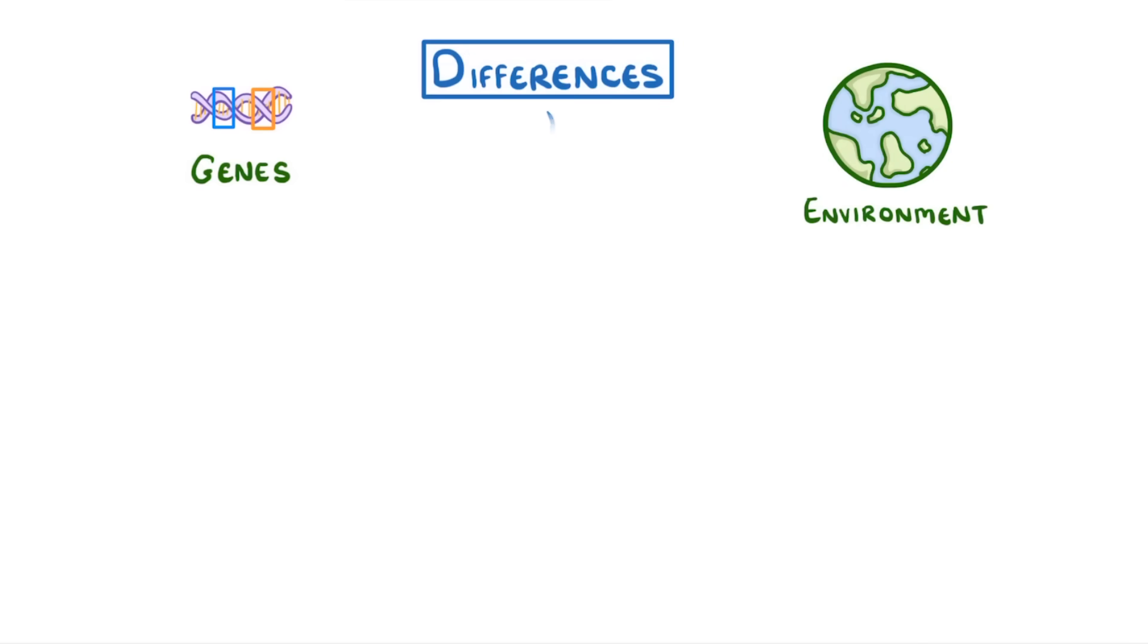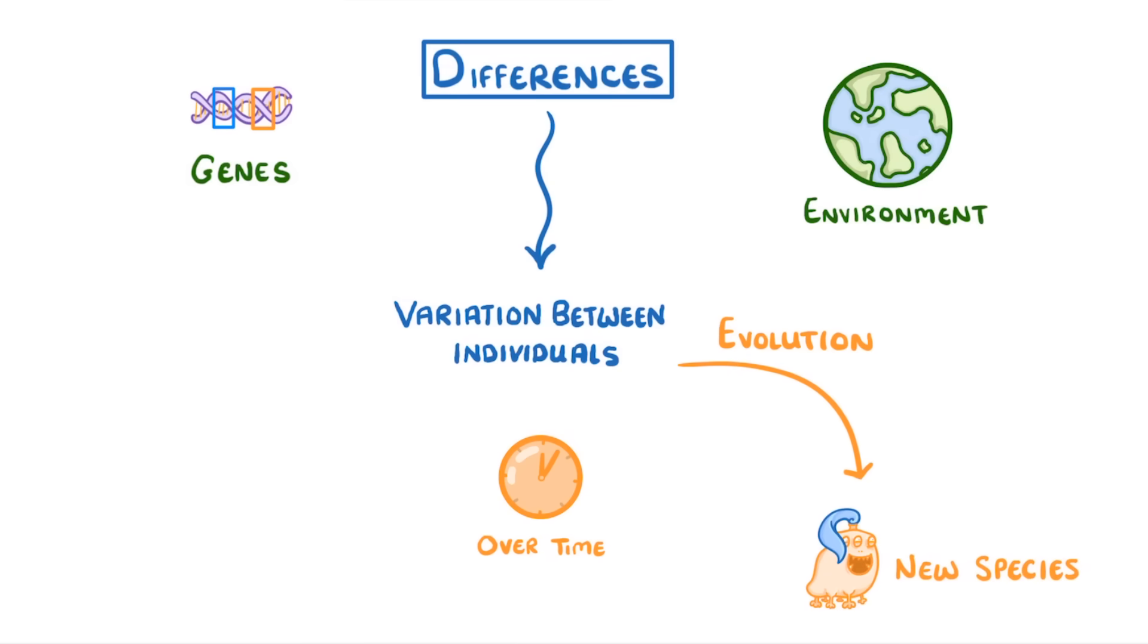In today's video we're going to see how the differences in both our genes and our environment can lead to huge variation between different individuals, and how over time this can lead to the evolution of new species by a process we call natural selection. If you take a look at a group of individuals in a population, you'll notice that they're all different, and in biology we call this variation as each individual has different phenotypes.